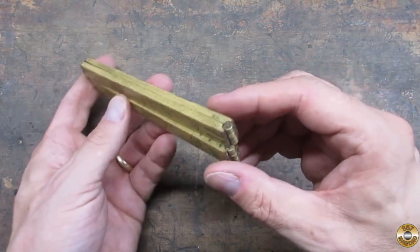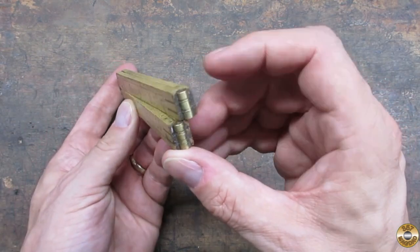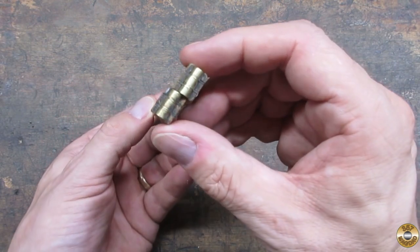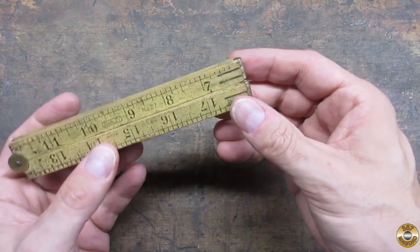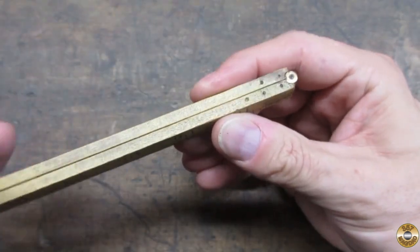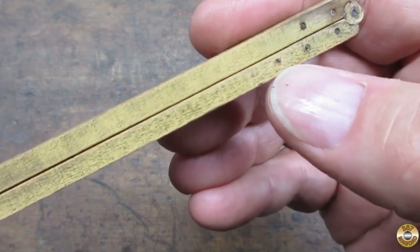The whole time I was working on this ruler, the misalignment when closed was bugging me. I noticed two tiny holes that might have been for an alignment pin.